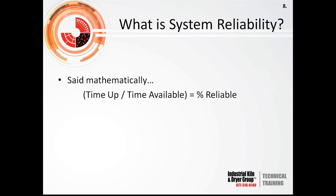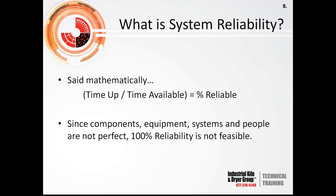Mathematically: time up over time available equals percent reliability. Since components, equipment, systems, and people are not perfect, 100% reliability is not technically feasible. So what can we do?